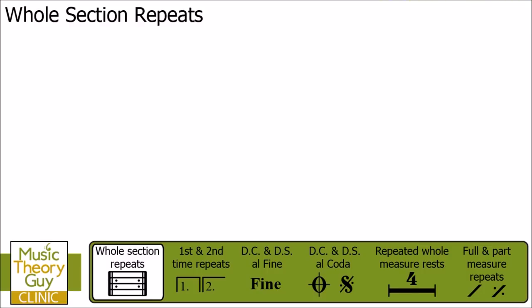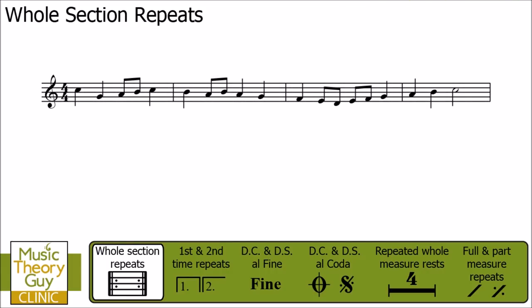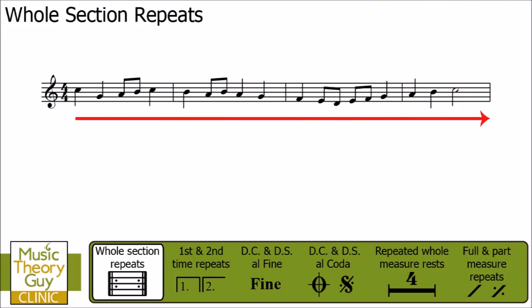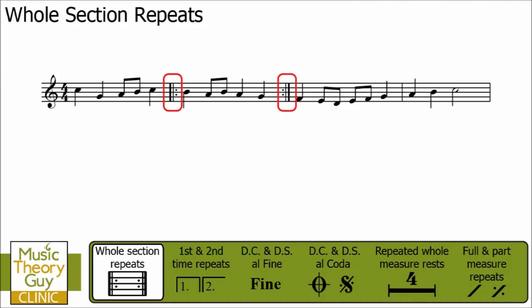For us to understand whole section repeats, we need to have a piece of music without any repeats. Here's one I've put together — let's have a listen. Now, as there are no repeats in this very short piece of music, the way it works is that if you're sitting at a piano, you'd start at the very beginning and play each note one after the other. But this is what happens if repeats do appear in music — let's pop a couple in.